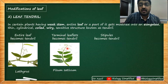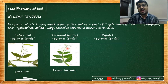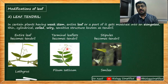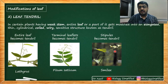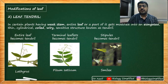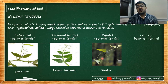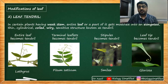Third instance: the stipules become tendril — in the case of Smilax. This is the normal lamina, and these are the stipules becoming the tendril. In all three instances, the stem is very weak, so it is for the purpose of supporting the stem. And lastly — the leaf tip becomes tendril, in the case of Gloriosa. You can see a curved line structure — the tip of the leaf turns into a tendril.